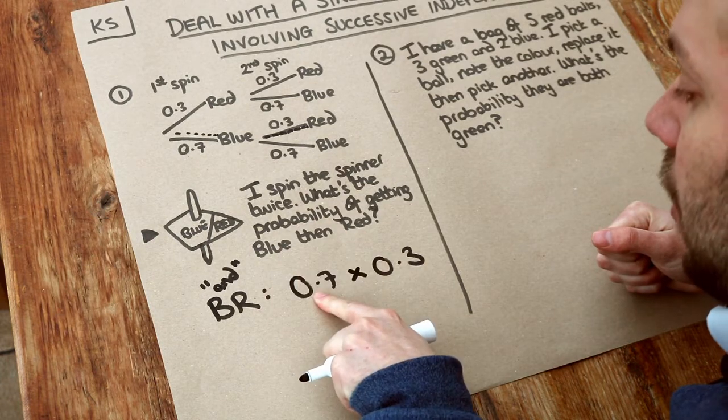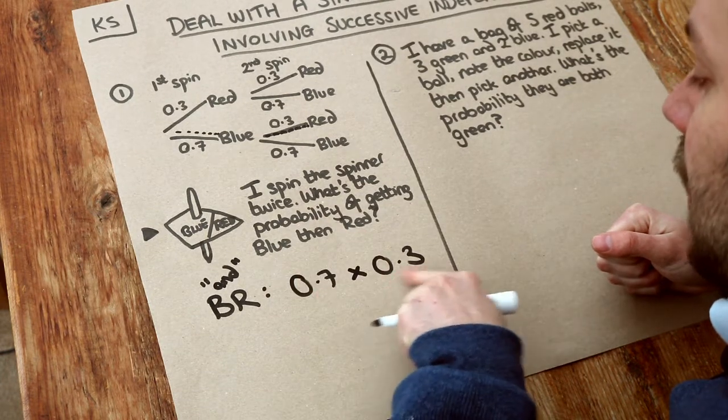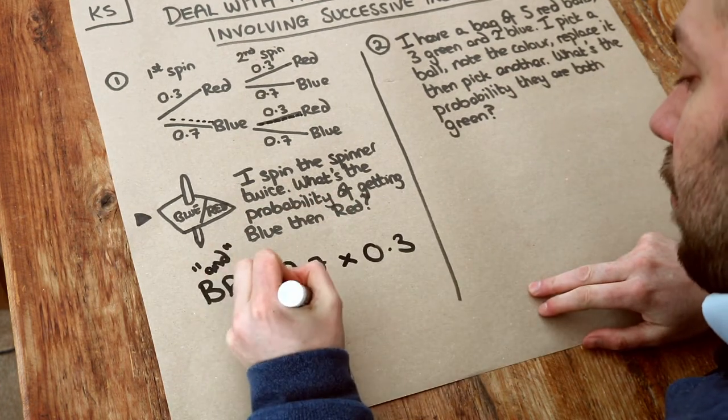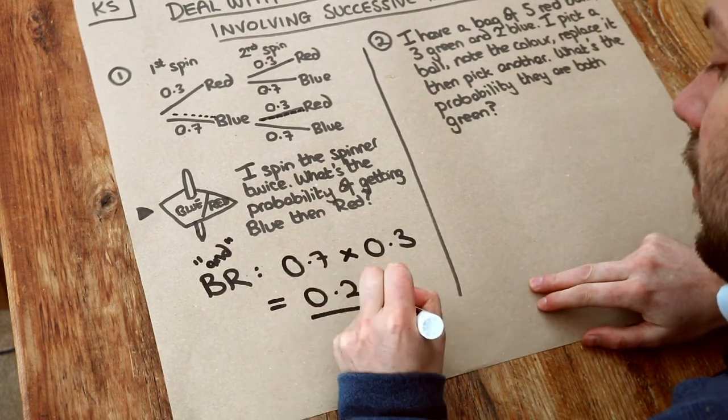So the probability of the first is blue, 0.7, and the second spin is red. Because I use the word and, I times, and that is going to give you 0.21. So that is the answer.